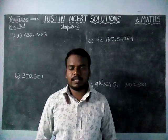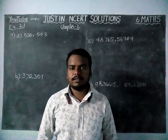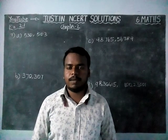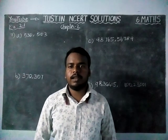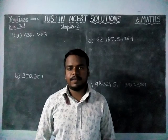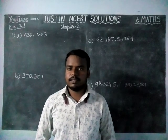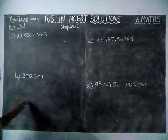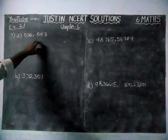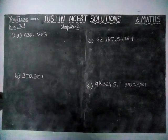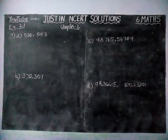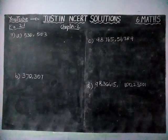Hi students, welcome to Justine NCRT Solutions. In this video we are going to see 6th Maths Chapter 2 Exercise 2.1, 7th question. Here they have given a pair of numbers and they ask us to find which number will come left of the other number, and we have to use the sign for which number is greater or less than.